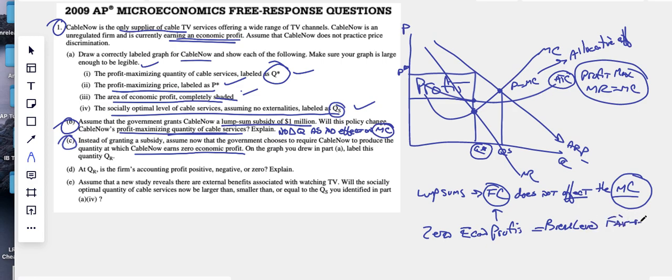Zero economic, break even, do know that zero is the same thing as saying a normal profit. They could have used that just as easily and understand that's where your price is equal to your ATC. So that quantity right there would be QR. Hopefully you can make it a little better than I could. Quantity QR. At QR is the firm's accounting profit positive, negative, or zero?